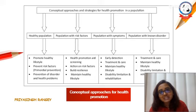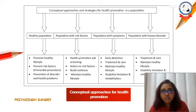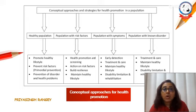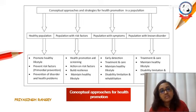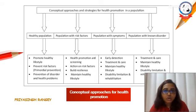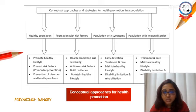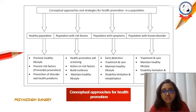In a population which already has symptoms, early detection is important. The earlier we detect symptoms, the sooner we can treat the pathology. Treatment and care always follow early detection. When detecting any pathology early, we can change the pathophysiology of the disorder and how it will spread or increase in the future. We can ask the person to maintain a healthy lifestyle so the pathology is not worsened, and we can limit the disability or focus on rehabilitation if the pathology might not be completely cured. In a population with a known disorder, treatment and care is important, along with maintaining a healthy lifestyle and disability limitation and rehabilitation.